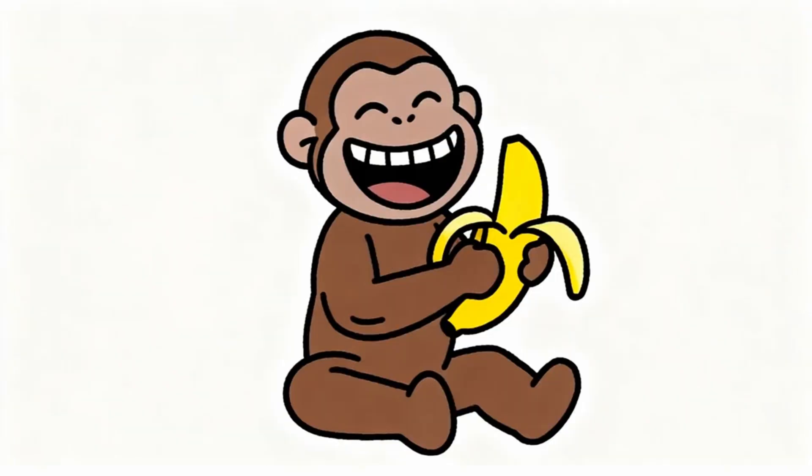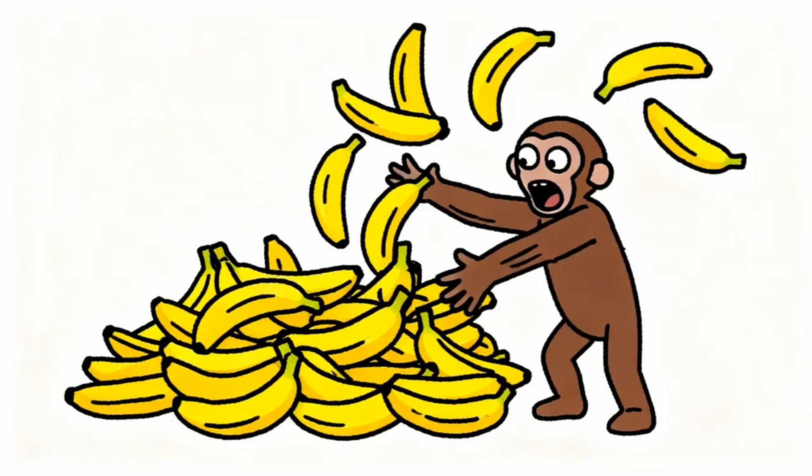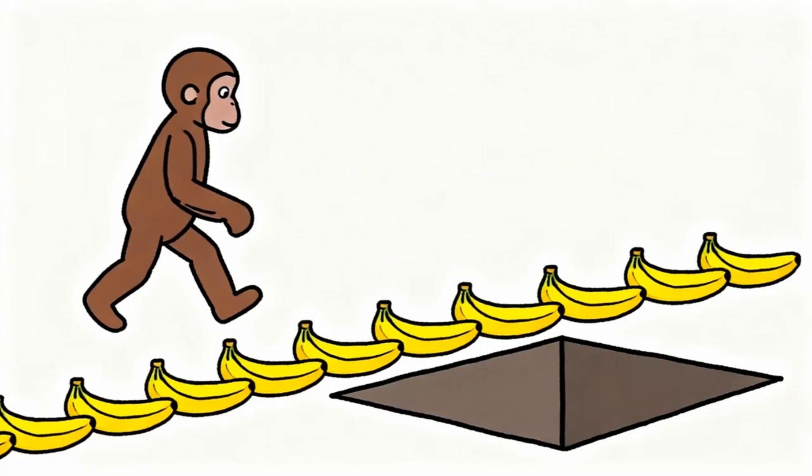Monkey brain wants banana. Monkey gets banana. Monkey feels good. But what happens when monkey gets too many bananas too easily? Monkey brain breaks. This is the dopamine trap and every monkey on the planet is falling into it without even knowing.